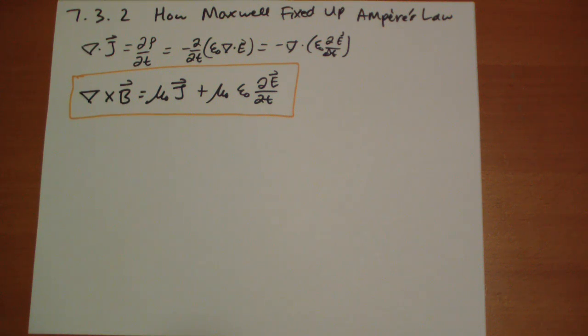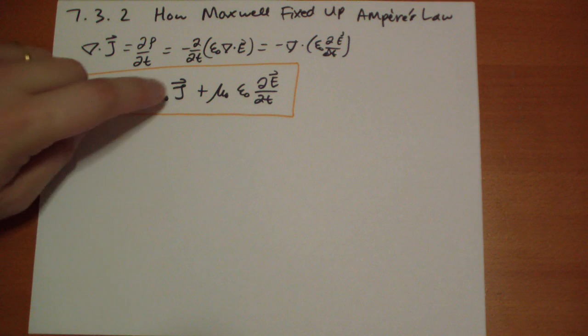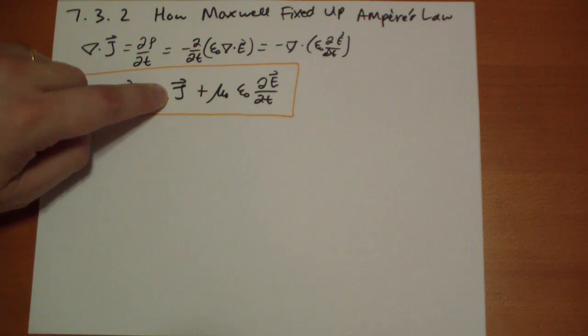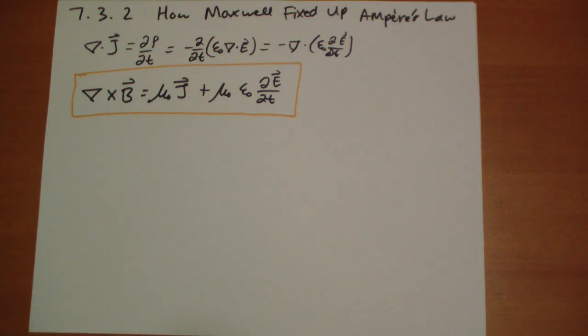The reason why is that the divergence of this term is equal to negative the divergence of that term, so they cancel perfectly.